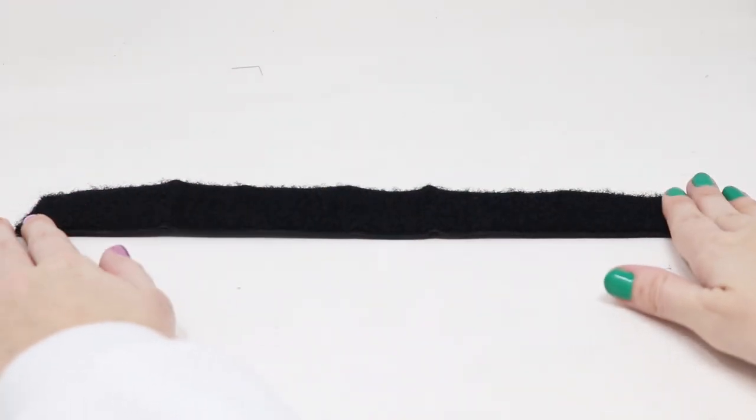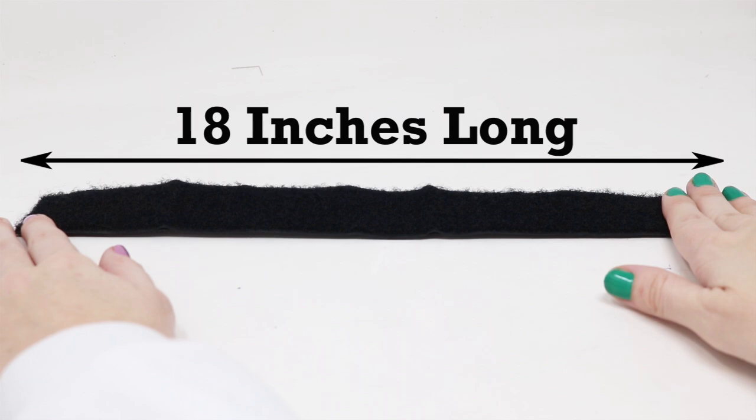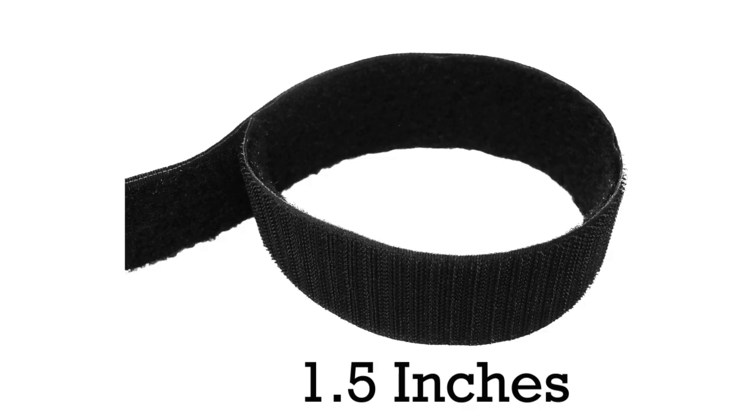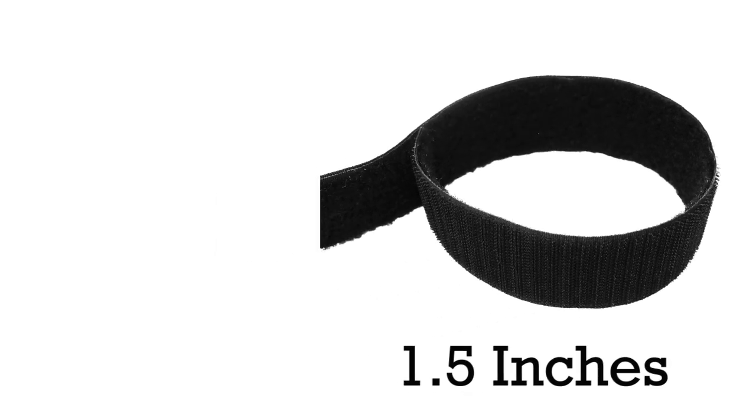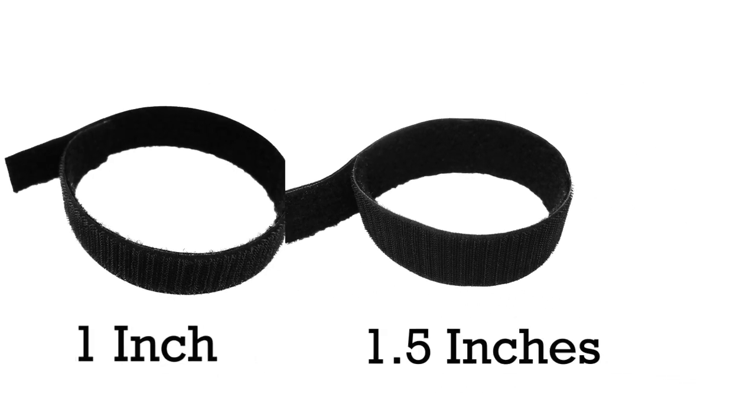Our strips come in a standard length of 18 inches but are available in any length. This product is one and a half inches wide, but we offer Tidy Tite strips in three different widths: one inch, one and a half inch, and two inches.